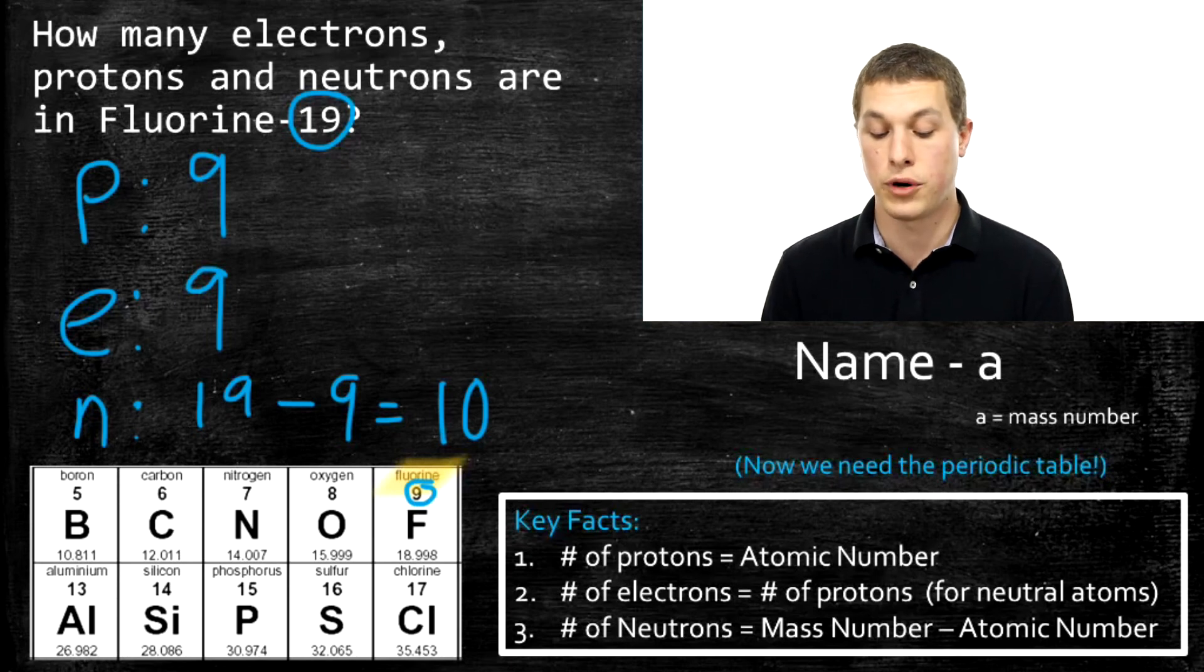it's easy to determine the number of protons, electrons, and neutrons. And the only real difference is now we have to take a look at the periodic table.